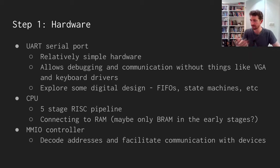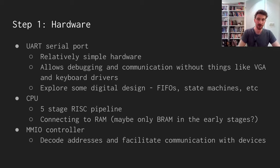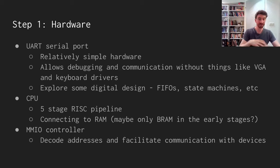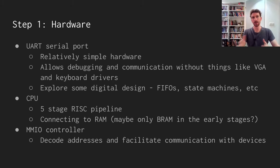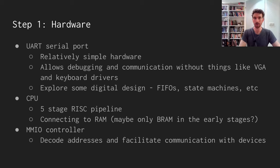Each instruction takes five clock cycles, at least in the ideal case, to run. But the benefit is that you can be running five instructions in parallel — that is a hardware parallelism that speeds up programs dramatically. When pipelining was introduced into CPUs, it was just game-breaking, and everyone immediately went to pipeline. Five-stage pipeline is actually pretty small now — Intel chips have very long pipelines. Pipelining is a way of squeezing parallelism out, but it comes with costs and trade-offs.